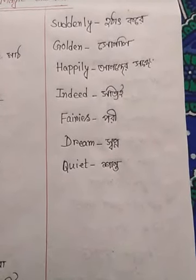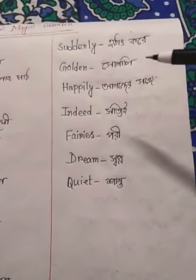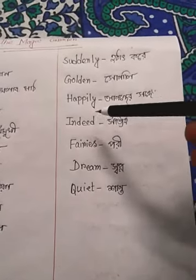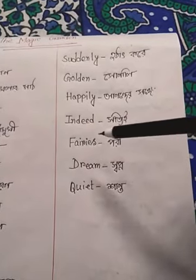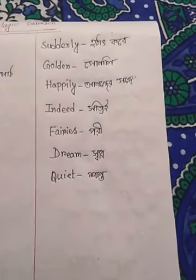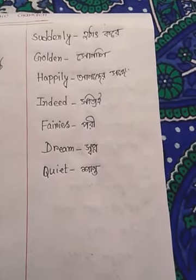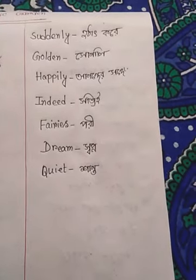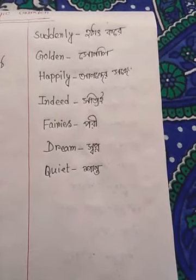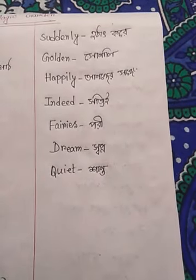Here I wrote some word meanings from the story, The Magic Garden. You can see. Take a pen and a copy and note down these word meanings, it will help you to read the story. That's it for today. Next day I will discuss the opposite words, make sentences, and I will solve the question answers from the story.